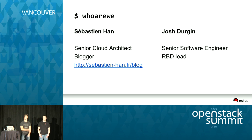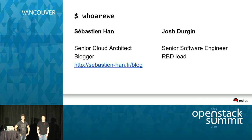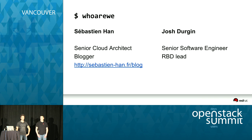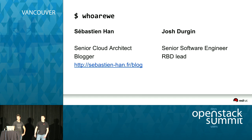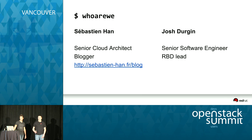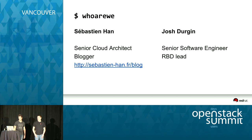Apart from this, I always devote a third part of my time to blogging, so here's a little bit of self-promotion. My name is Josh Durgan. I'm the RBD lead developer. I'm with Red Hat now. I was part of Big Tank and DreamWorks before that. I've been working on Ceph since I graduated college.